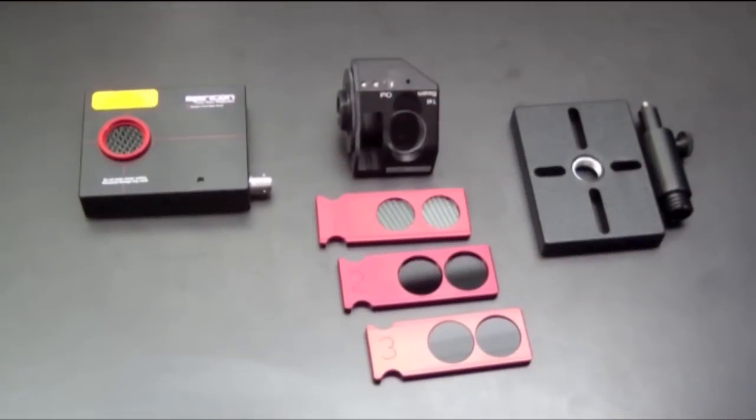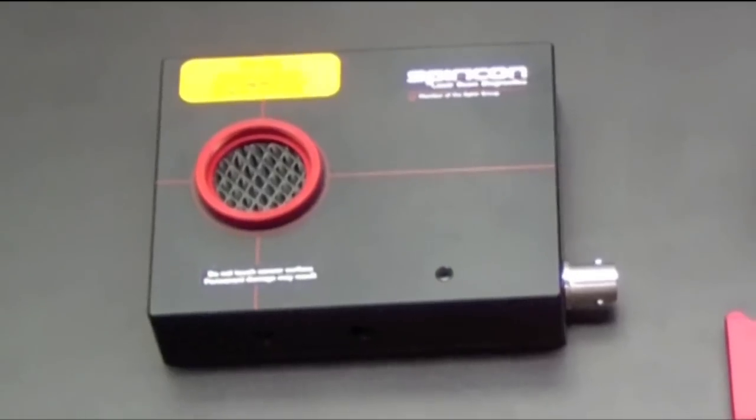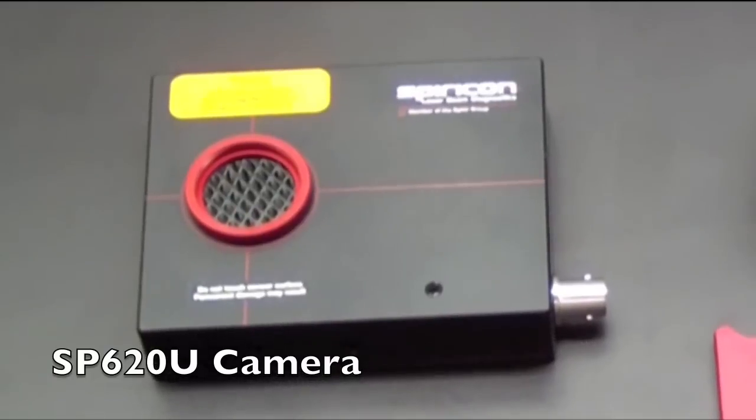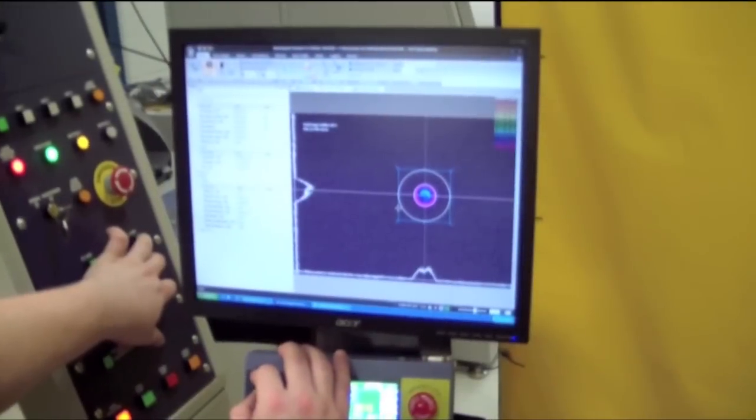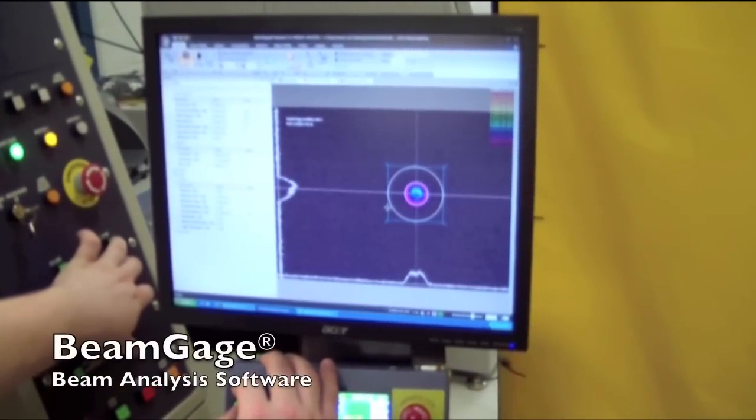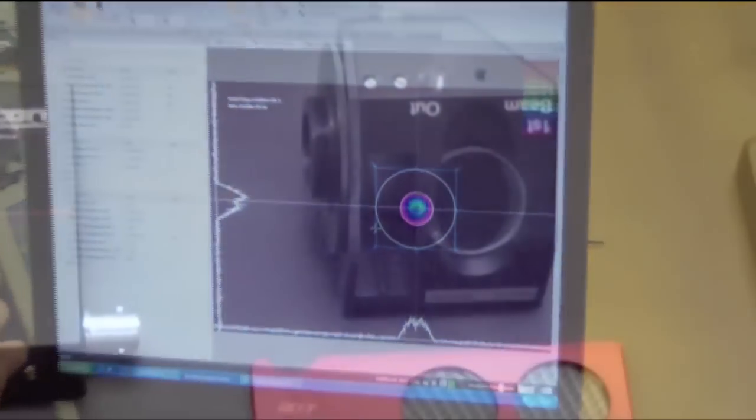First, make sure you have all of your components. For this scenario, we will be working with the Spiricon SP620U high-resolution USB camera which is interfaced with a local PC running the beam gauge beam analysis software.